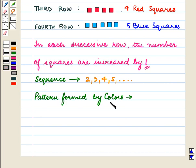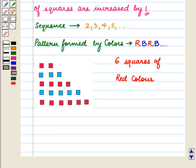The pattern formed by colors is red, blue, red, blue, and so on. So from these two observations, we can find the number of squares and the color used in the 5th row. So the 5th row will have 6 squares of red color.